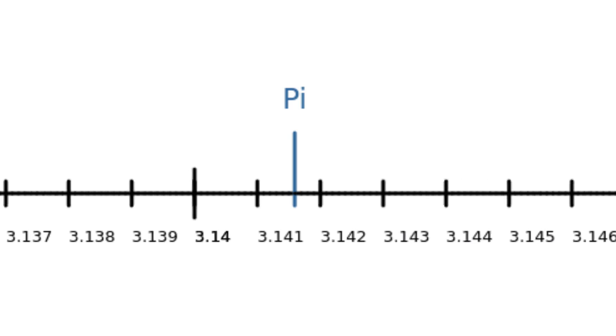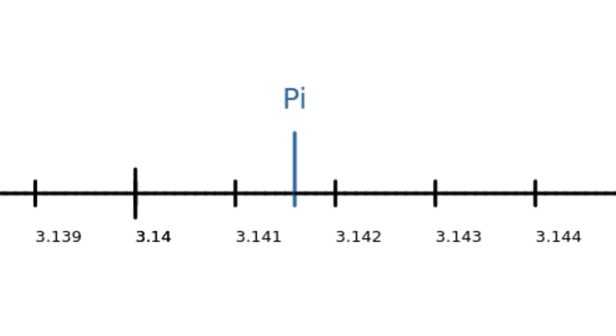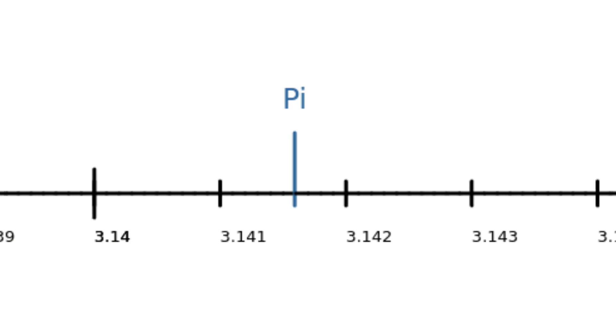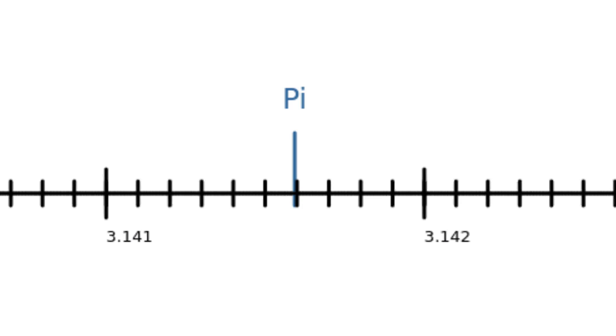So using a list of nearby rationals is a good idea, but using rationals whose denominators are powers of 10 is pretty arbitrary. Among all the possible sequences of rational numbers that approach pi, what makes a particular sequence a good way to approximate pi? Aren't they all equally arbitrary?